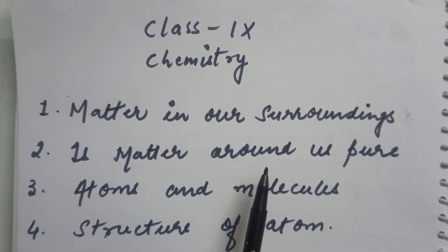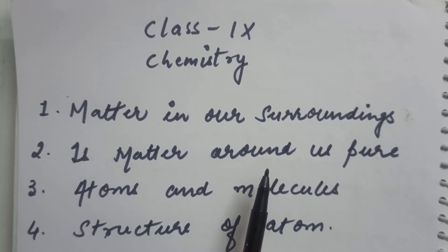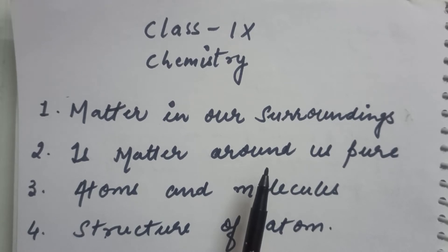Before we discuss, some important things: in 8th class you studied science as a complete subject, in which one teacher covers 3 subjects — physics, chemistry, and biology. So we divide science into 3 main streams or parts. We are going to start with the first part, that is chemistry.